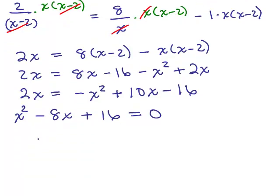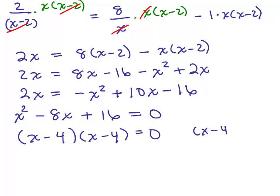Now we factor. This happens to be a perfect square. You can write it as x minus 4 quantity squared, or x minus 4 times x minus 4 — it doesn't matter which way. So x minus 4 squared equals 0. Setting the factor equal to 0: x minus 4 equals 0, which means x is 4.